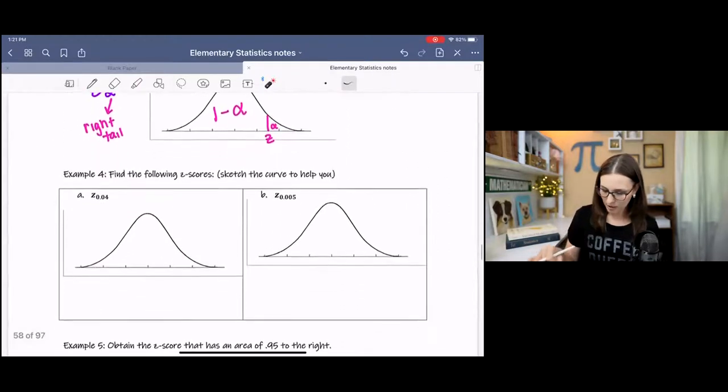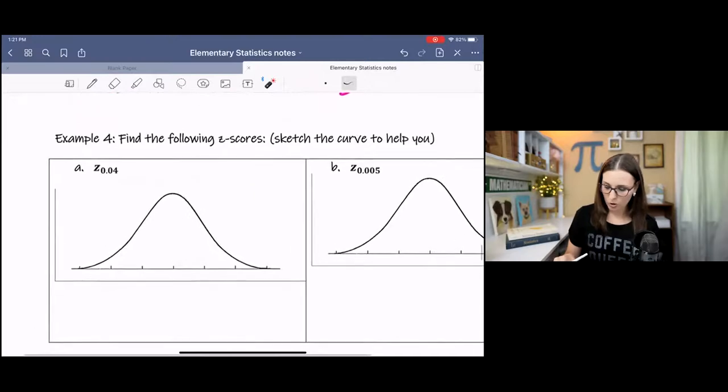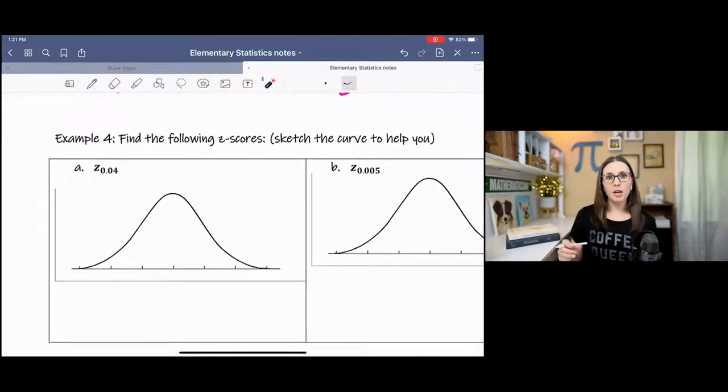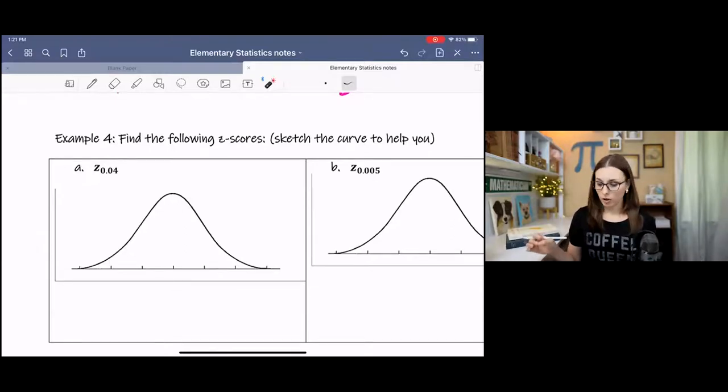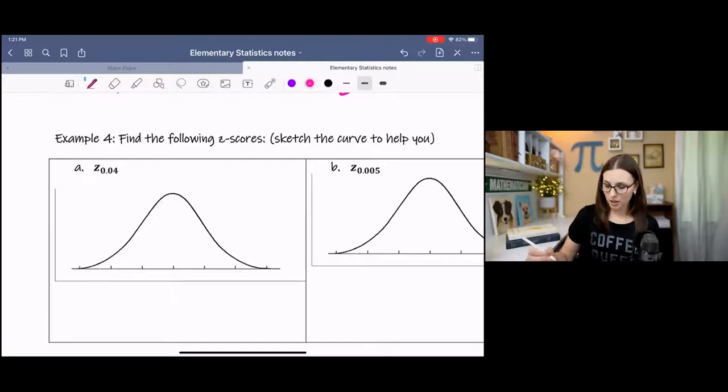So if we were to sketch what this looks like, if we had, for example, z sub alpha, then alpha is representing a right tail. So I don't have a number for alpha in this case, I'm just sketching. So if I were to say alpha is here, alpha is an area of the right tail. Then one minus alpha is to the left. And this is the z-score associated with alpha.